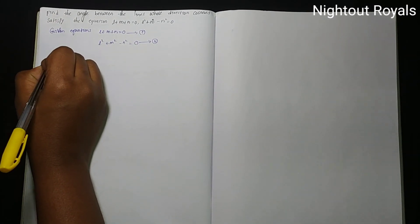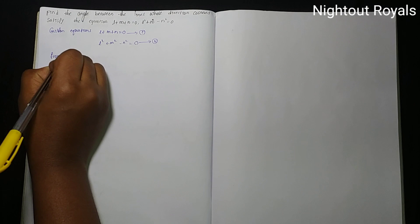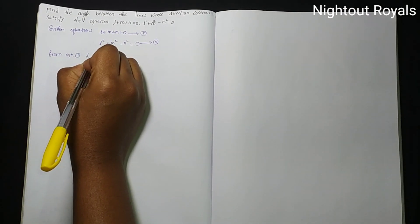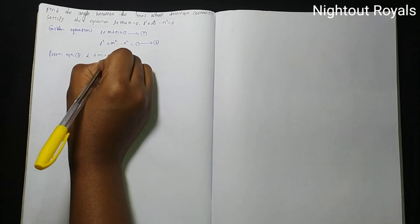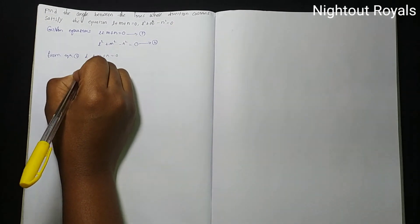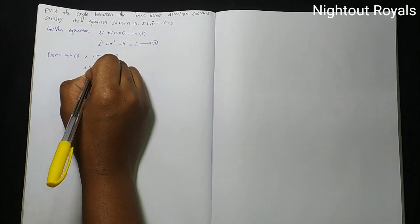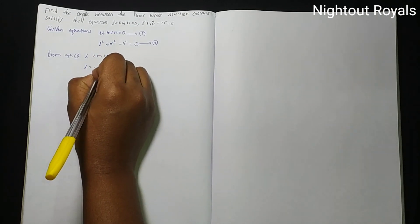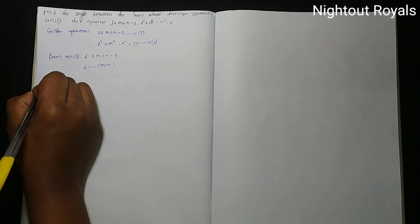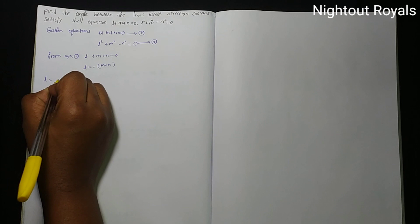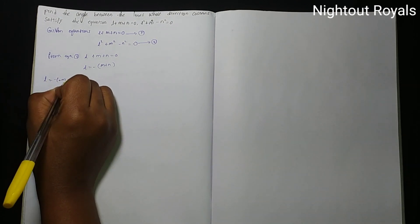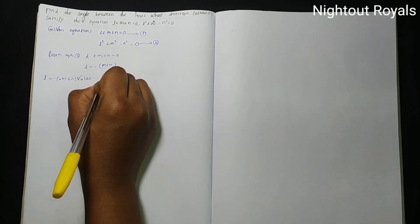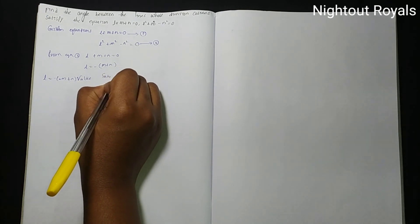From equation 1, L plus M plus N equal to 0, we get L equal to minus M plus N. We will substitute this value into equation 2.